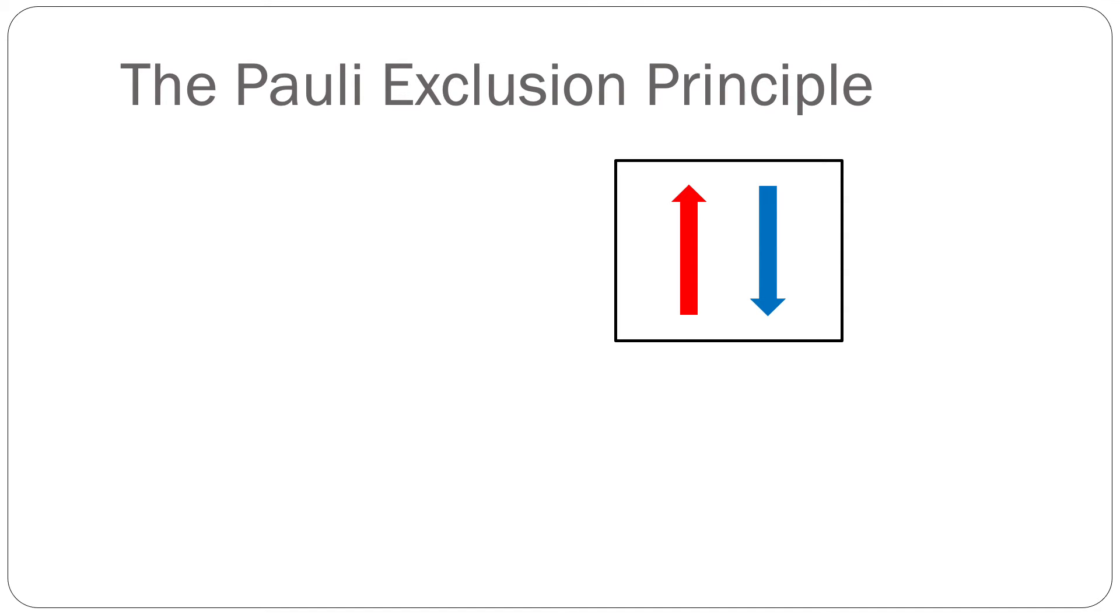When drawing electron diagrams, you'll notice when two electrons occupy an atomic orbital, the arrows are opposite spins. Let's look at this from a quantum number perspective now.